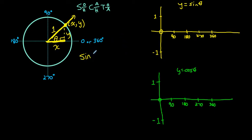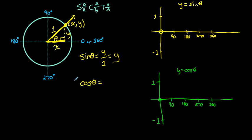Sine theta equals the opposite side, y, over the radius of 1. So sine theta is actually just equal to the y-coordinate — it tells you the distance between the x-axis and the point that intersects the unit circle. Cosine theta equals adjacent, which is x, over the radius, which is 1. So cosine actually just tells you the horizontal distance you are from the y-axis.